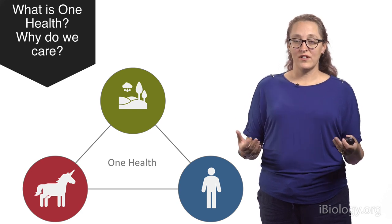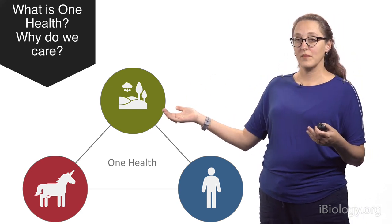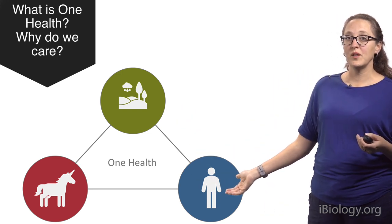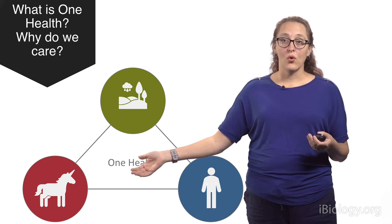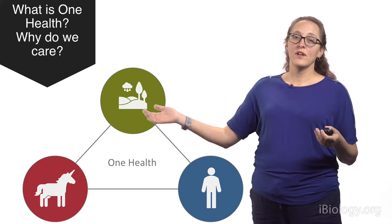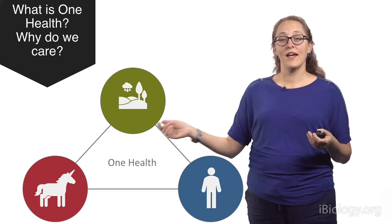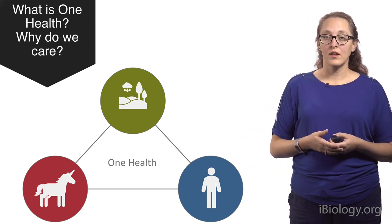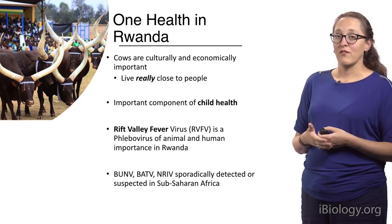Most often vector-borne diseases are influenced by the environment. There is a subset of them that are of public health importance to people, but a lot of the times they are of veterinary or wildlife or zoonotic importance. We have already been working in this space of this triad of environment, animal, and human health. So we're going to talk about One Health in Rwanda.